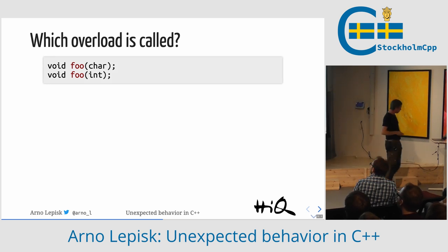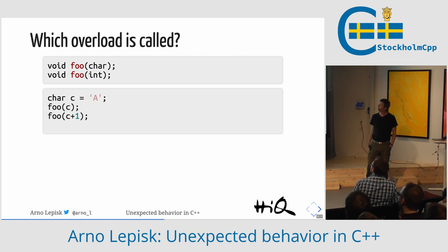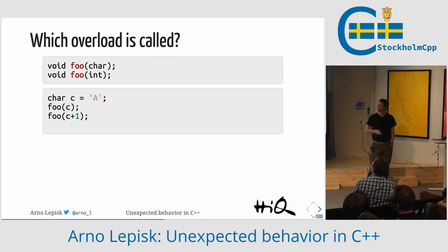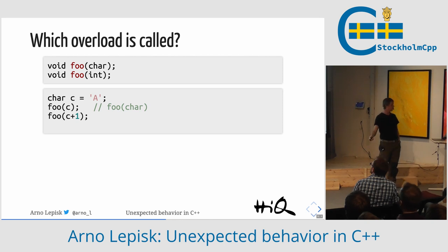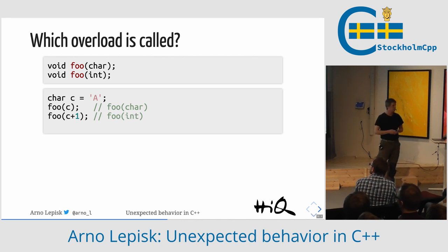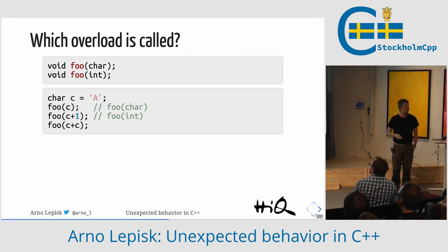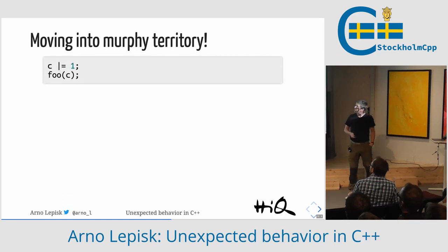More quizzes. We have an overloaded function foo — it takes a char and an int. What's called in these cases? The first one is straightforward — a char. But if you add one to a char, what does that evaluate to? An int. Pretty straightforward. Then we have the case where we add two chars — it's int as well.